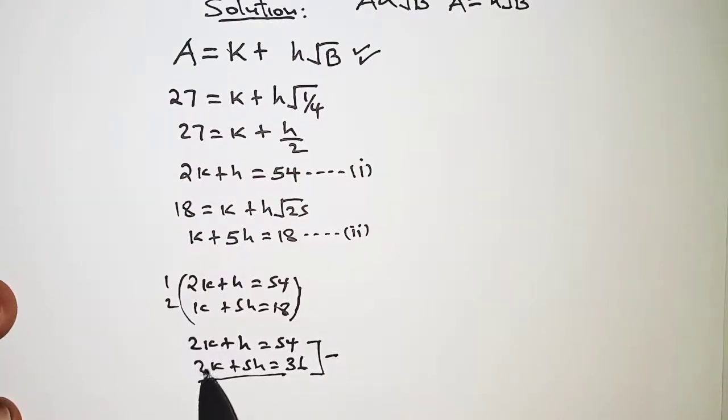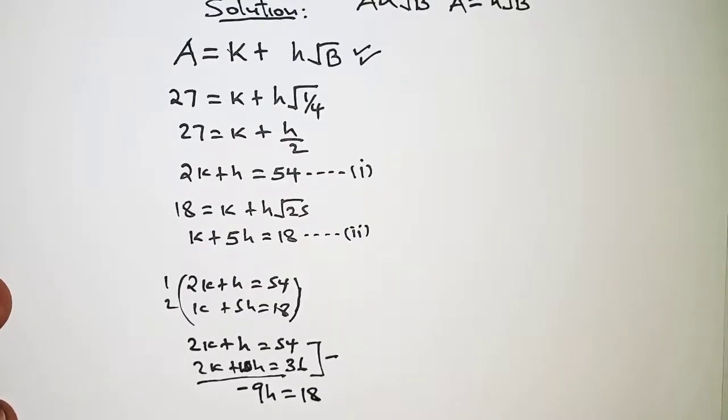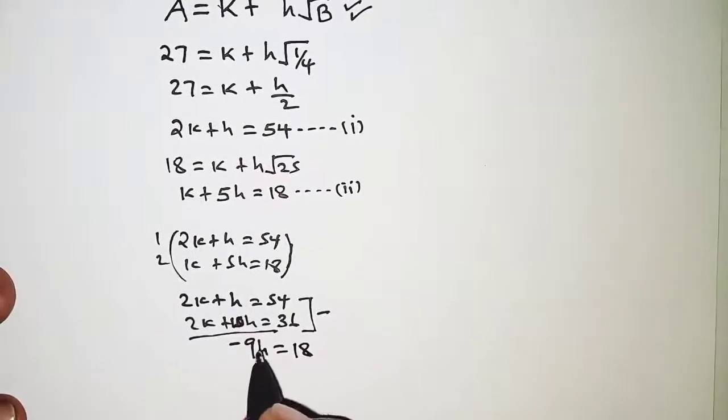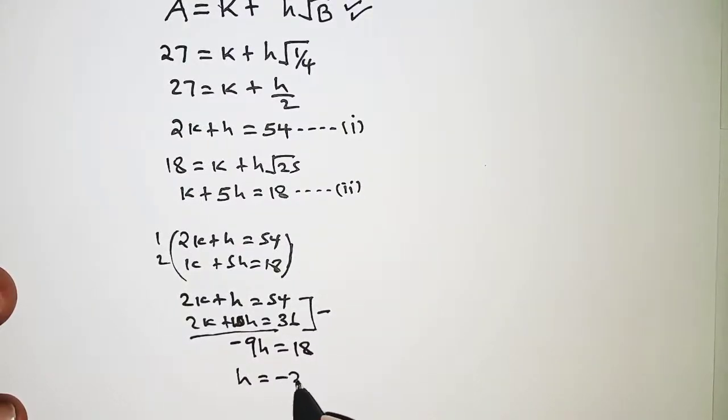For this case you are going to eliminate k by simply getting the difference. 2k minus 2k is 0. h minus 5h that should give us, oh sorry, here is supposed to be 10. 2 by 5 that is 10. So h minus 10h, that should be negative 9h which is equal to 54 minus 36, that should give us 18. That means the value of h should be negative 2, dividing both sides by 9.